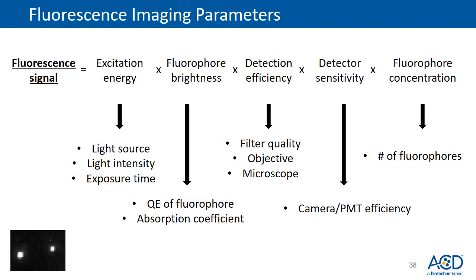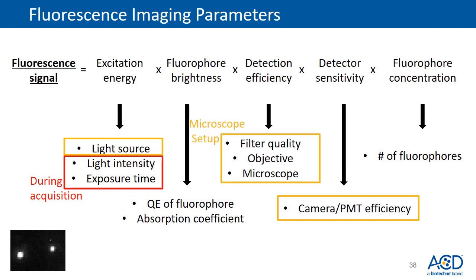In general, fluorescence signal is based on excitation energy, fluorophore brightness, detection efficiency, detector sensitivity, and fluorophore concentration. During imaging, we can change the light intensity and exposure time to get a nice signal. Other parameters like light source, filter quality, objective quality, and camera efficiency are based on the microscope setup and should be adjusted before experiments. We can also change the fluorophore concentration when necessary during experiments.